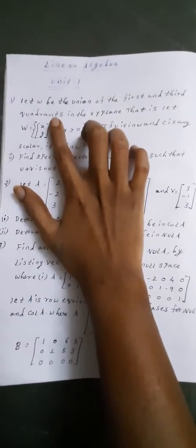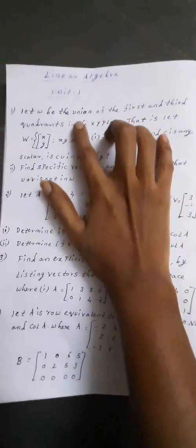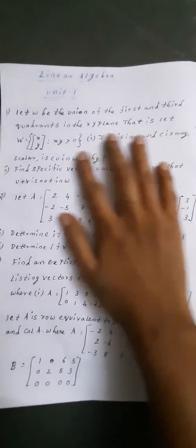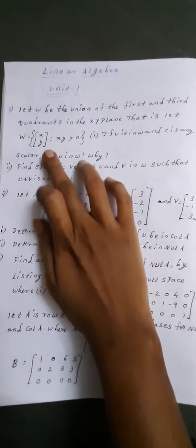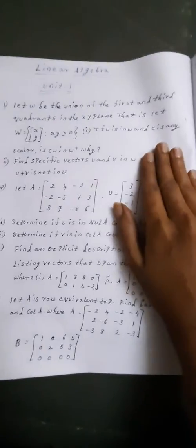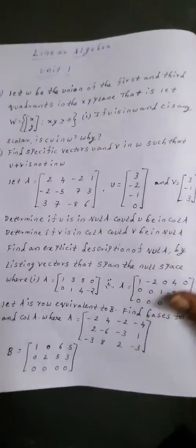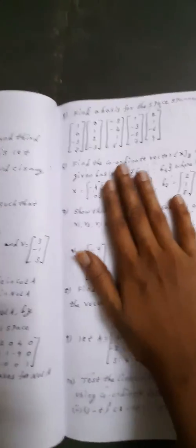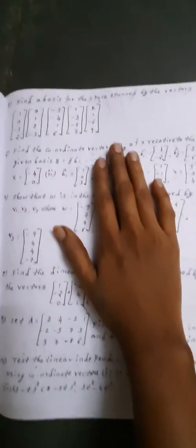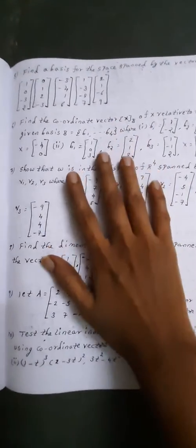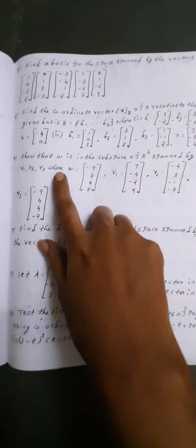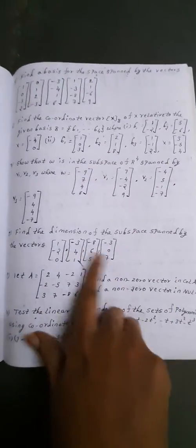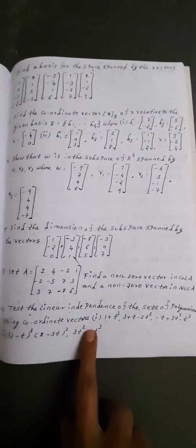Here in Unit 1, let W be the union of the first and third quadrants in the XY plane. That is, let W equal matrix form XY. This is the next page. Fifth question: find the basis of the space spanned by the vectors. Check these unity-wise.